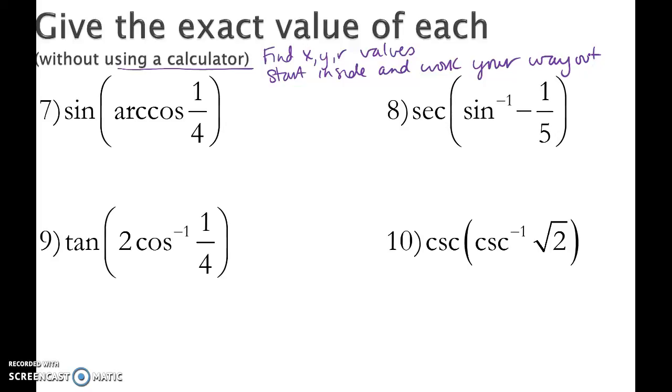So for this first problem, when I see arc cosine of 1 fourth, I'm doing a cosine inverse. Now, when I do a cosine inverse, my answer is going to equal an angle. And then next, I want to find the sine of that angle, which will give me a ratio. I really don't care what the angle is. I just care what the sine ratio is at that angle.